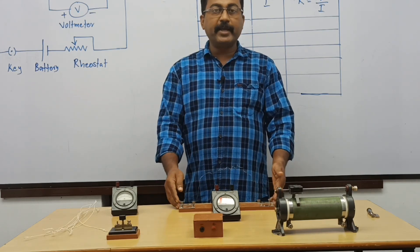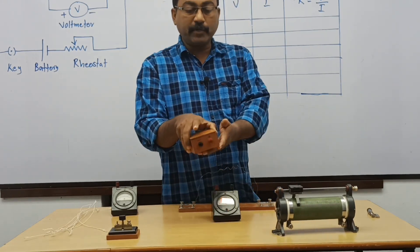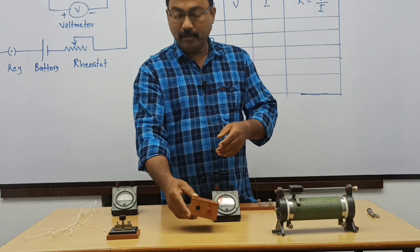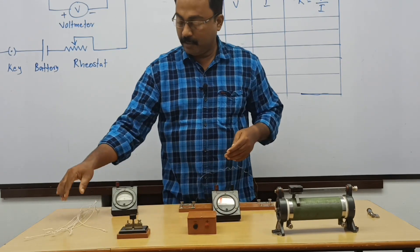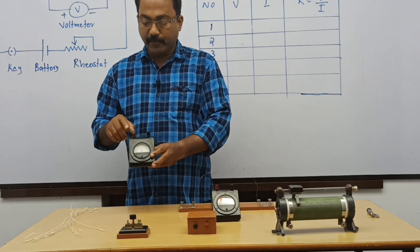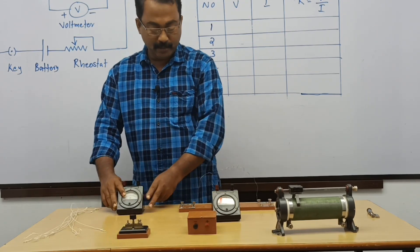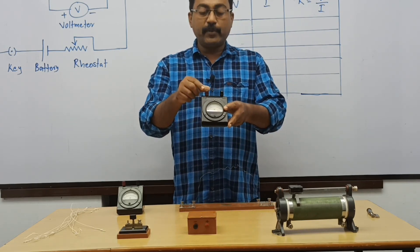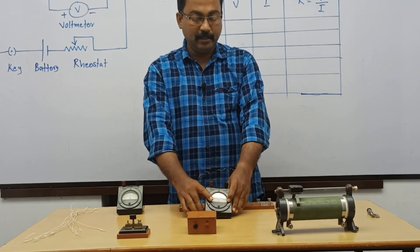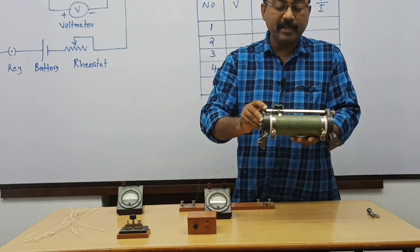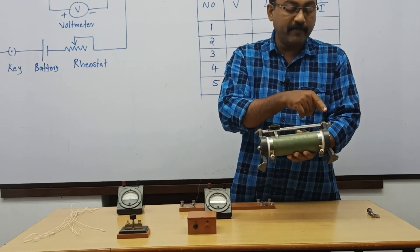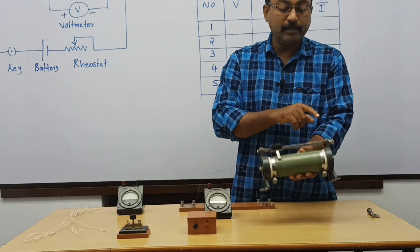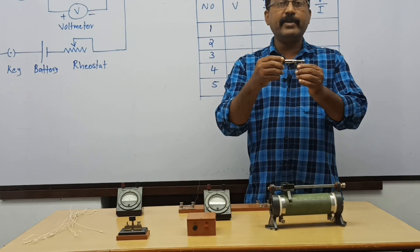Now I have arranged all the apparatus on this table. This is a battery box containing two dry cells, positive is red, black is negative. This is the key. These are connecting wires. This is the ammeter with positive polarity here, negative polarity here. This is the resistance wire whose resistance is to be found. This is a voltmeter with positive polarity here and negative polarity here. This is a rheostat with three terminals: two terminals below and one terminal at the top. We have to use one terminal at the bottom and one terminal at the top. This is a screw gauge for finding the diameter of the wire.